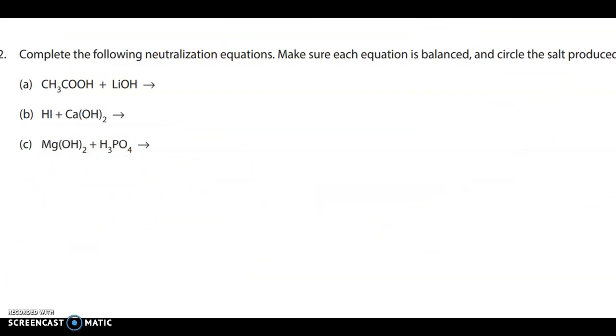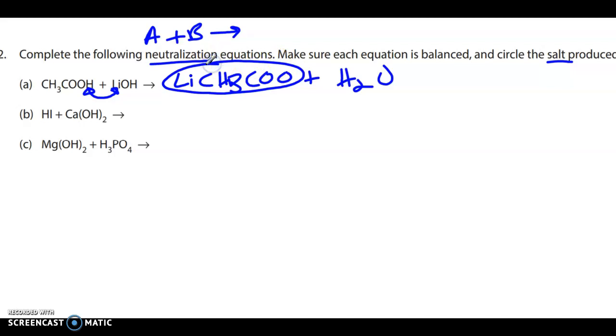So here we have some reaction writing to do. So it says we have to complete the following neutralization reactions, which is another way of saying we have an acid plus a base reacting together, right, in a double displacement reaction. Make sure each equation is balanced and circle the salt that is produced. Okay. So here we have acetic acid and lithium hydroxide, right? So the hydrogen is going to swap with the lithium. So we're going to have lithium acetate, CH3COO, plus water, of course.